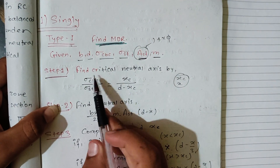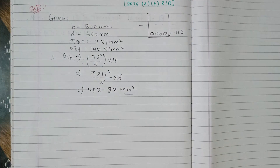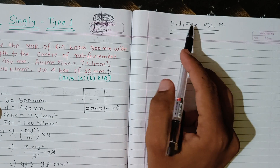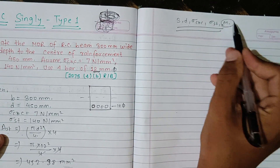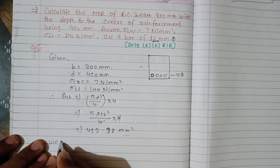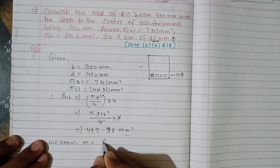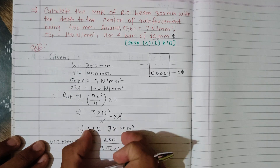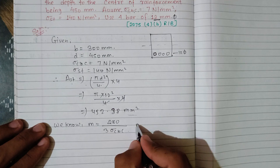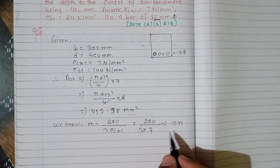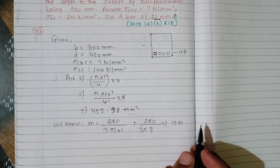Step 1: Find the critical neutral axis xc. We know m equals 280 upon 3 times sigma cbc. Plugging in: m equals 280 divided by 3 into 7, giving m equals 13.33.